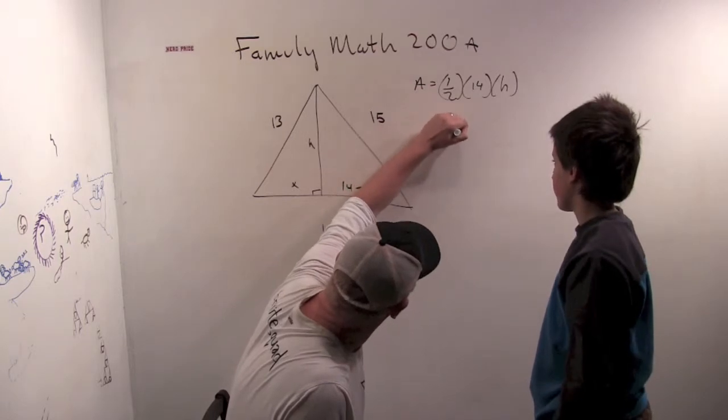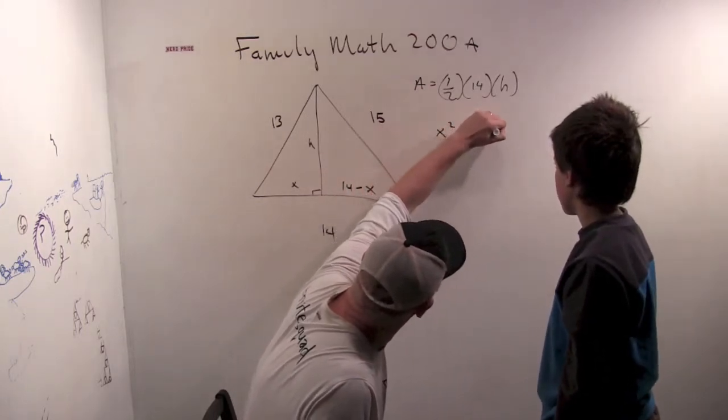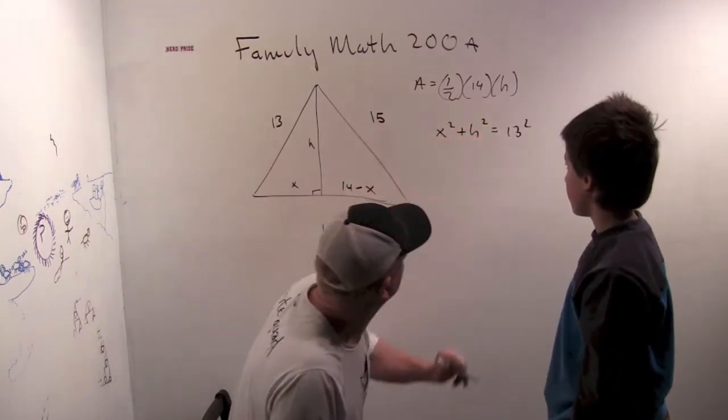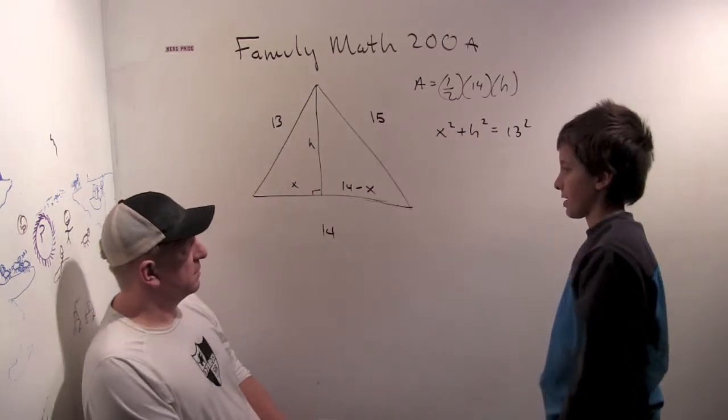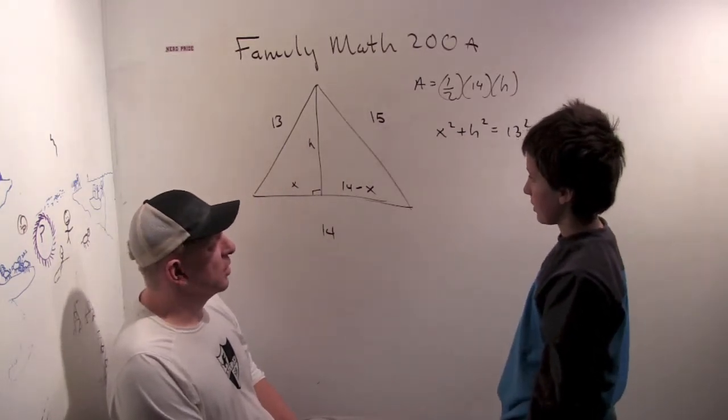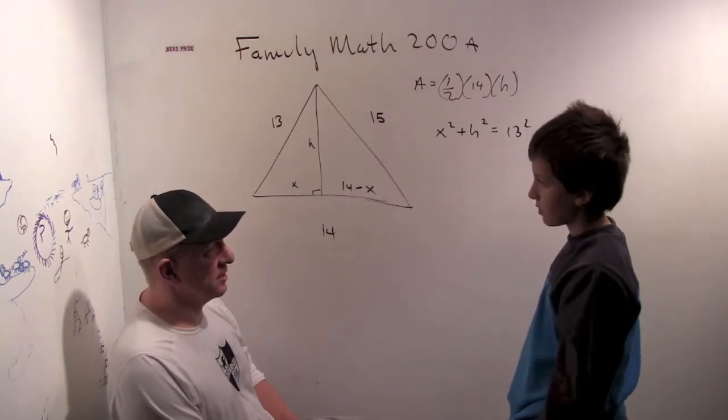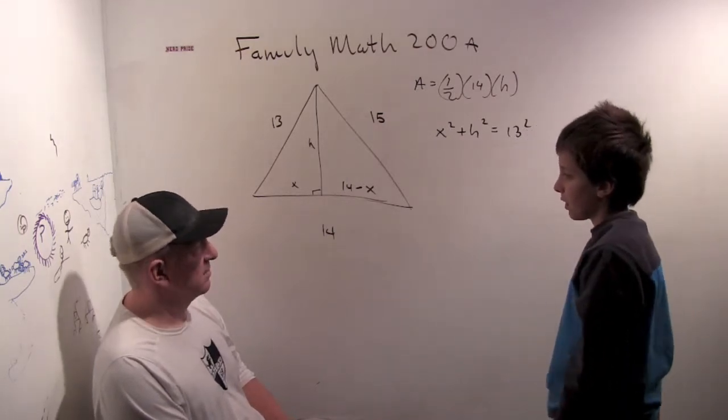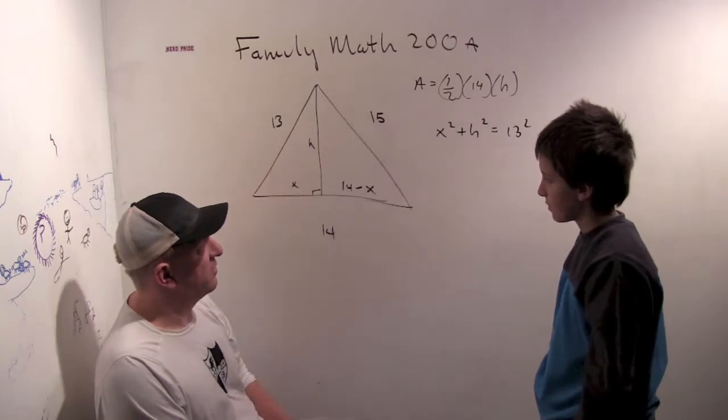Well, I know a triangle with 13 as the hypotenuse. What is it? I know a 5, 12, 13. Ooh, interesting. That might help us. Maybe this will be 5, 12, 13.